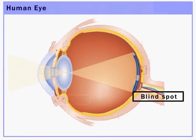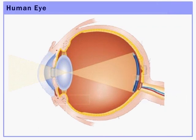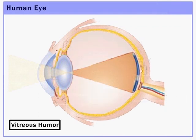This is the blind spot of the eye. It is the spot where the optic nerve goes into the back of the eye. There are no receptors in this place.